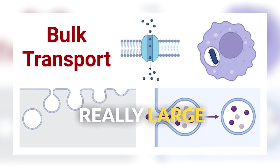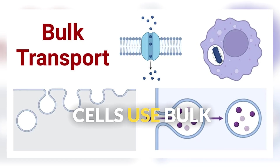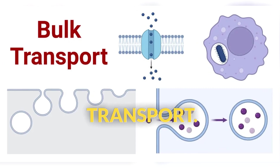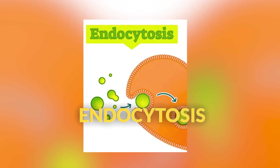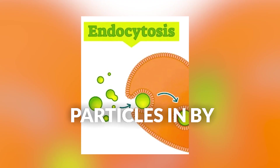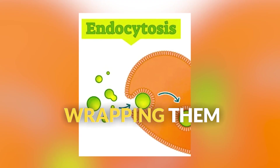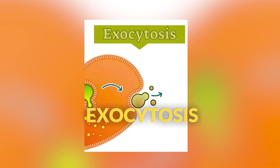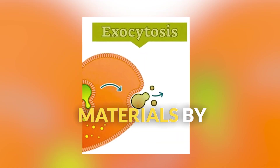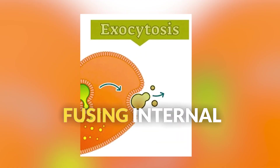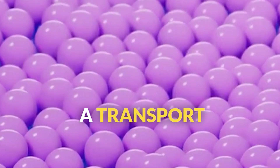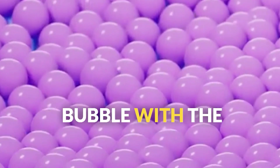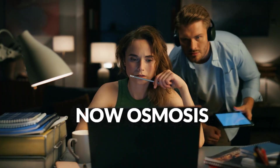For really large molecules, cells use bulk transport. Endocytosis brings large particles in by wrapping them in membrane, while exocytosis exports materials by fusing internal vesicles — like a transport bubble — with the cell membrane.